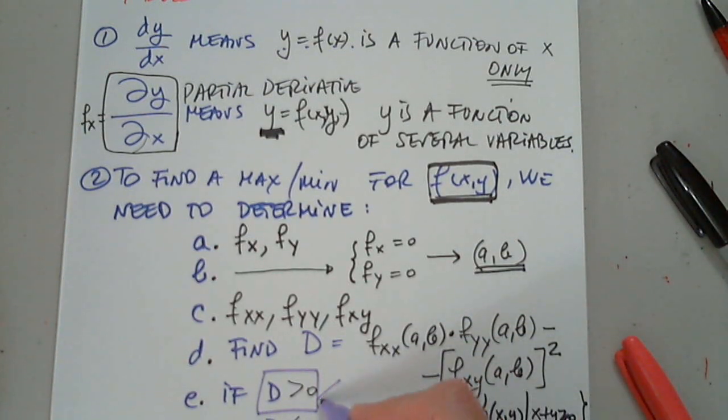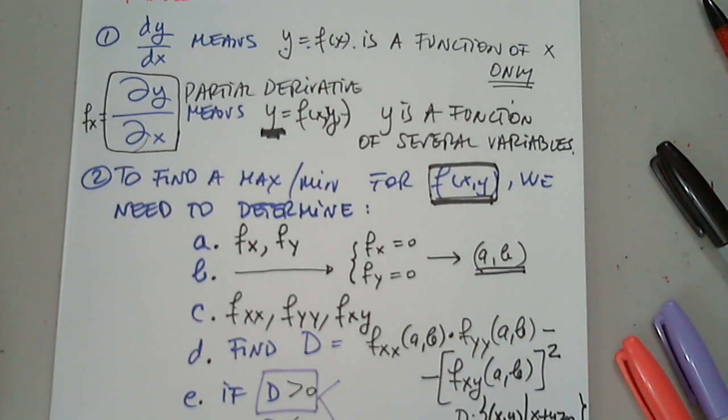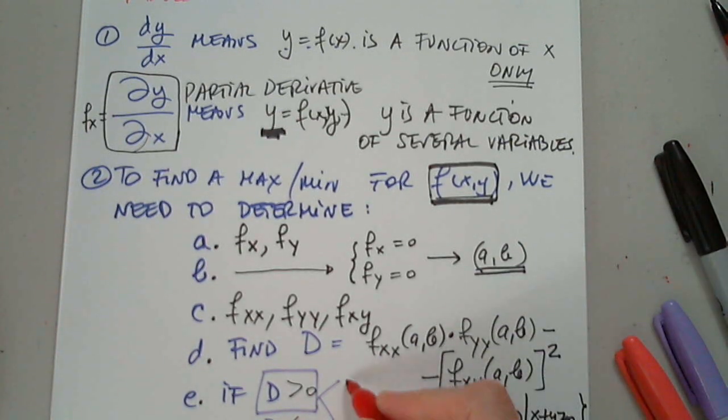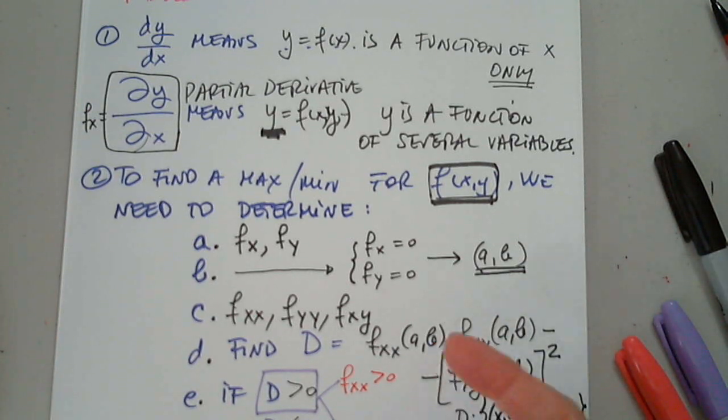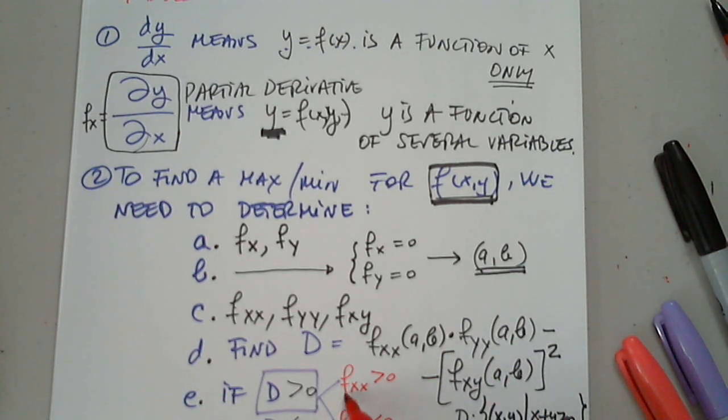So now here there are two options. And the options are fxx is positive, evaluated at a comma b, and fxx is less than zero. So what does this imply, and what does this imply? Not just this. D positive and fxx positive. D positive and fxx negative.